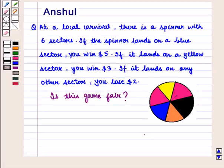Hello and welcome to the session. In this session we are going to discuss the following question. The question says that at a local carnival, there is a spinner with 6 sectors.